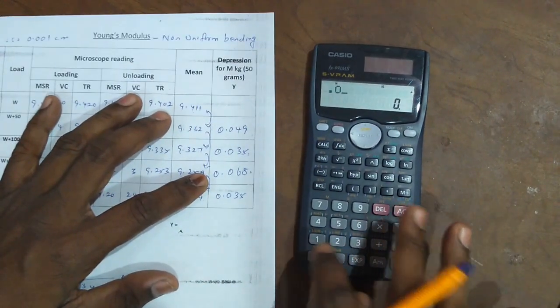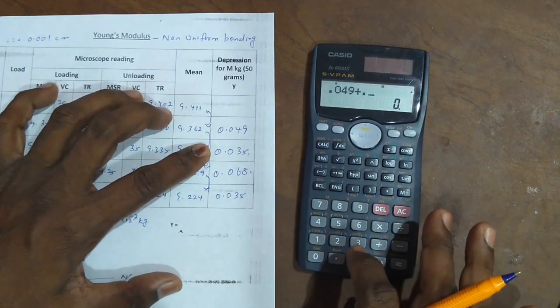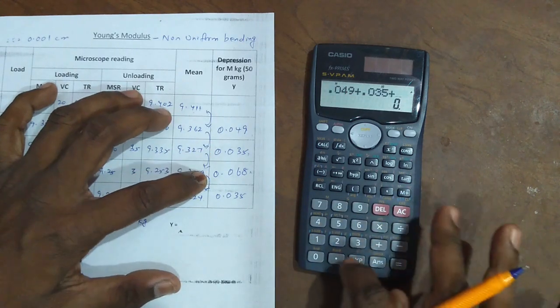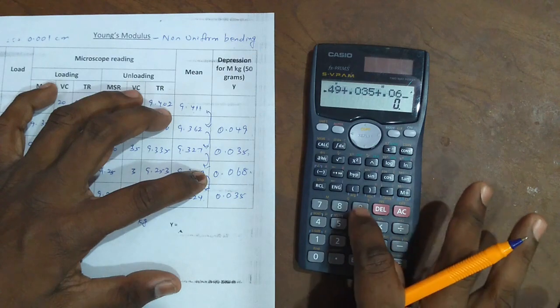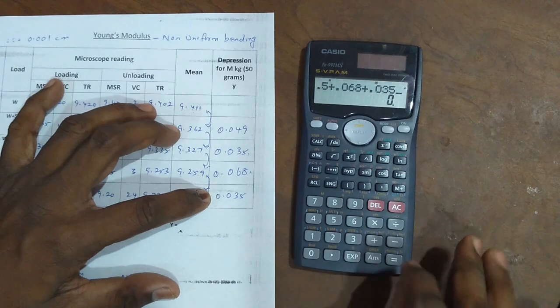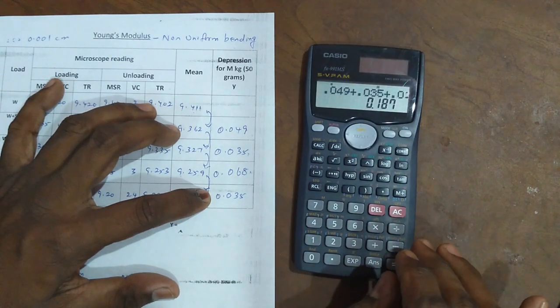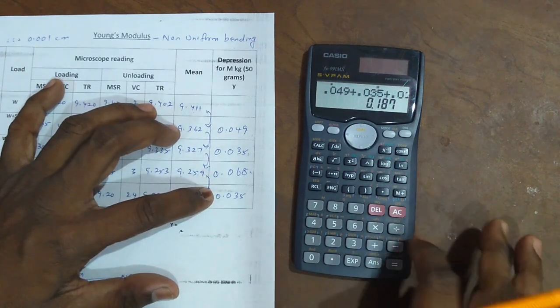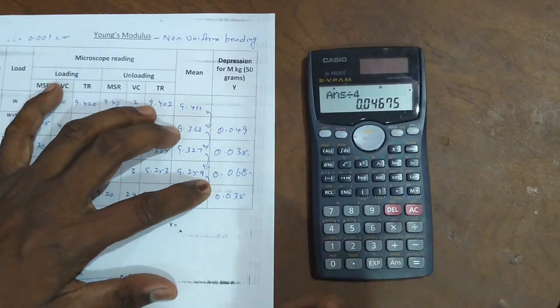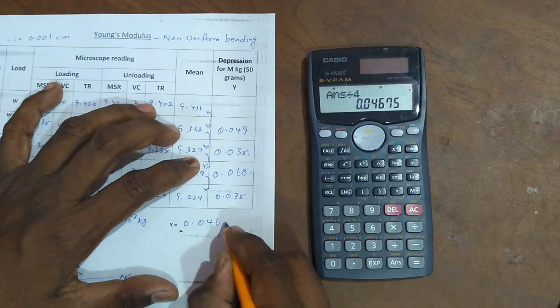0.049 plus 0.035 plus 0.068 plus 0.035. The answer is 0.187. This total value divided by 4, we call it the mean values. The answer is 0.04675.